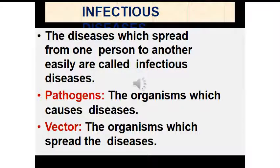The diseases which spread from one person to another easily are called infectious diseases. Pathogens are the organisms which cause diseases. Vectors are the organisms which spread or carry the disease — for example, in malaria, the mosquito is the carrier. It is important to keep public health and community health factors in mind when we think about causes of diseases. Infectious agents are mostly microbes, and diseases where microbes are the immediate causes are called infectious diseases because they can spread easily.